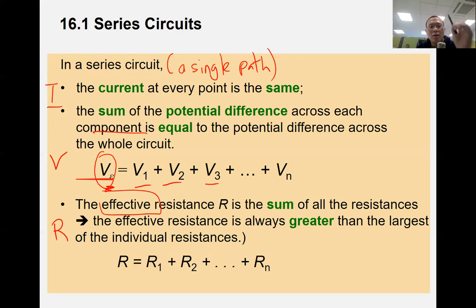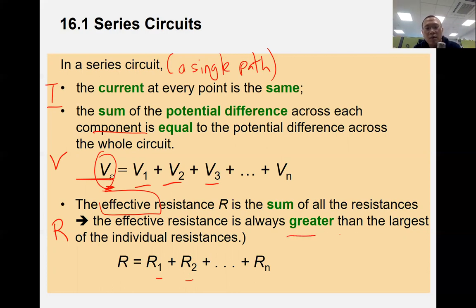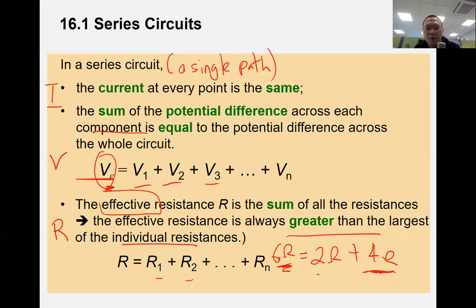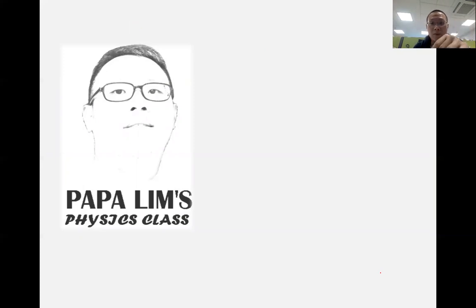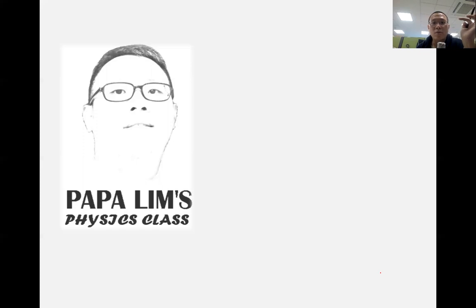For effective resistance in a series circuit, the total resistance equals the sum of all individual resistances — R1 + R2 + R3 and so on. One important thing to remember: the effective resistance will always be greater than the largest individual resistor. For example, 2 ohms plus 4 ohms gives 6 ohms, which is greater than either value. That concludes series arrangements. The next segment will cover parallel arrangements — stay tuned, and please leave any questions in the comments below.